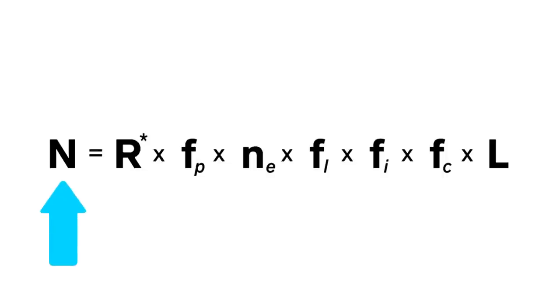We'll start here. This is the variable we're trying to solve for, n. Next is the average rate of star formation in the galaxy. Okay, we have a general understanding of star formation in the Milky Way, so we can put a number there. Then the fraction of those stars that have planets, we can pretty reasonably put a 1 there, as just about every star we've observed hosts several planets.